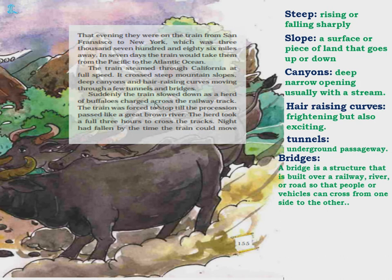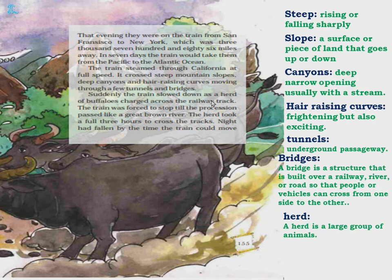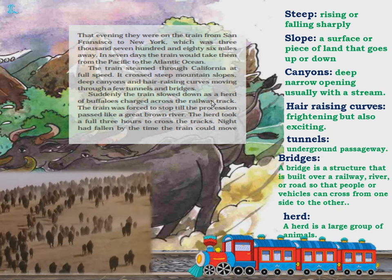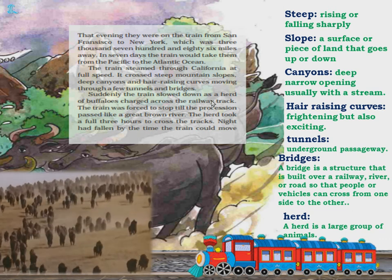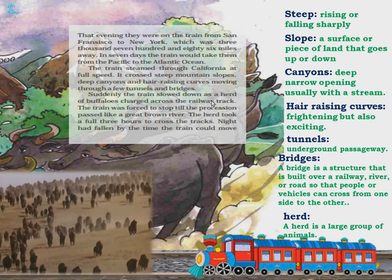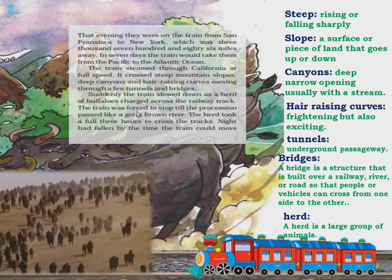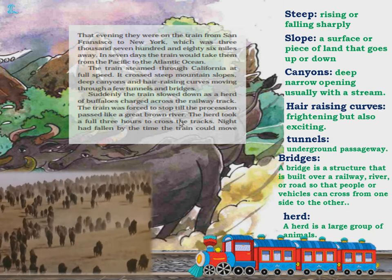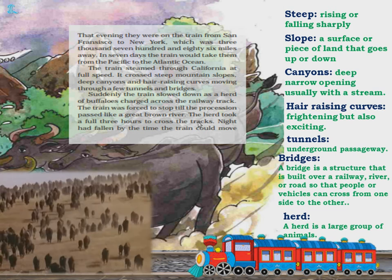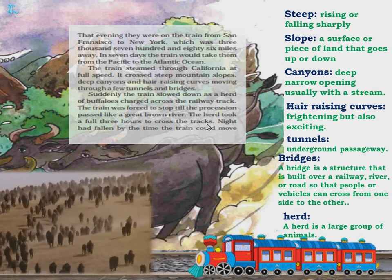Suddenly the train slowed down as a herd of buffaloes charged across the railway track. A herd is a large group of animals. The train had to stop because the herd was crossing. The train was supposed to stop till the procession passed like a great brown river. The herd took a full three hours to cross the track.